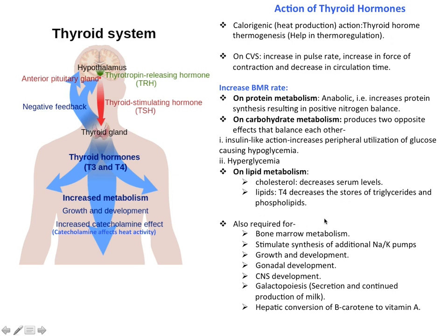These hormones are also required for bone marrow metabolism and stimulation of synthesis of additional sodium-potassium pumps. They are helpful in growth and development, gonadal development, central nervous system development, galactopoiesis — meaning continued production of milk — and hepatic conversion of beta-carotene into vitamin A. Here you can see these thyroid hormones work in almost every part of the body, making them quite essential hormones.